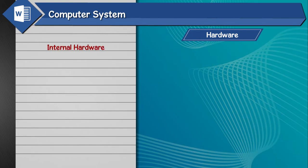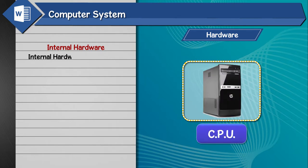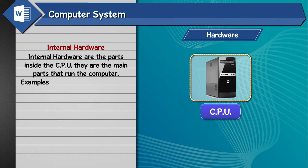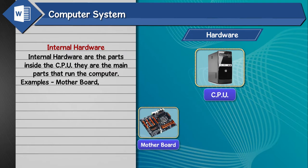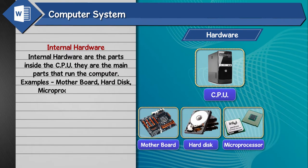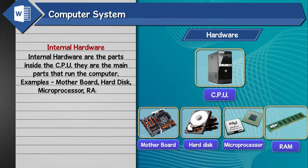Internal Hardware. Internal hardware are the parts inside the CPU; they are the main parts that run the computer. Examples include motherboard, hard disk, microprocessor, and RAM.